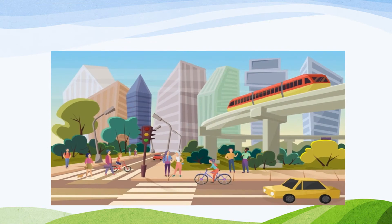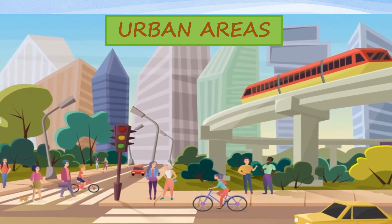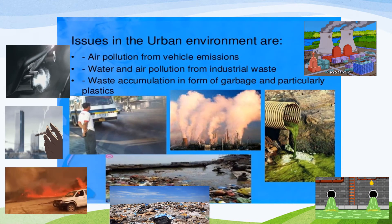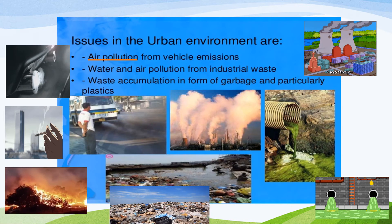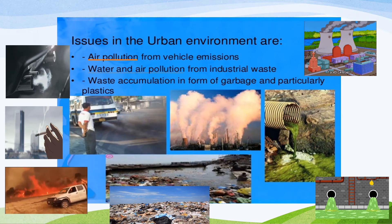Moving on to the next lesson — what can you see in this picture? There are many buildings, many people, as well as vehicles. So we are in the urban areas. In urban areas, there are issues in the urban environment.